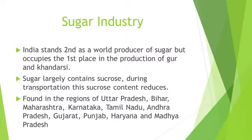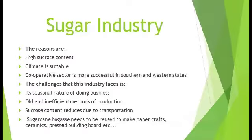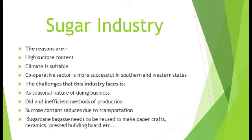Let us study the reasons for this shift. In these states, the sugar cane has the highest sucrose content. The climate is also suitable for crushing the cane for better output. The cooperative way of doing business is most successful in these states compared to Bihar and UP.